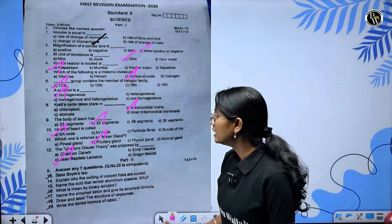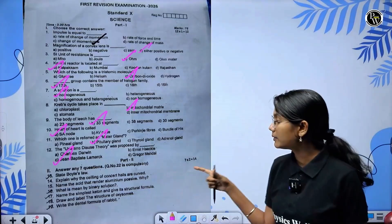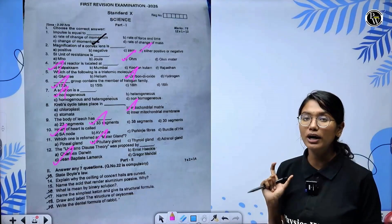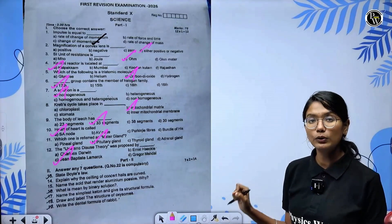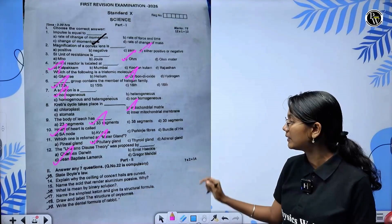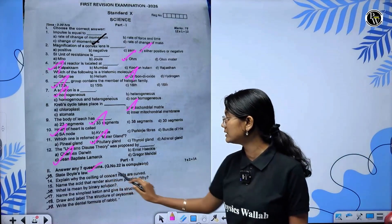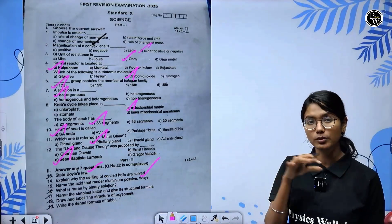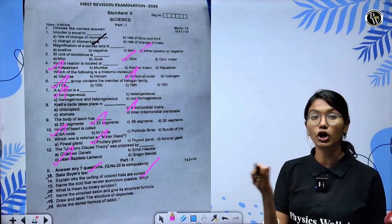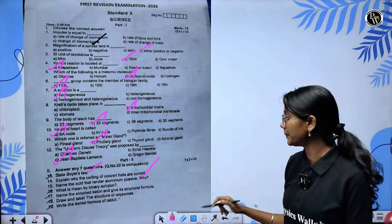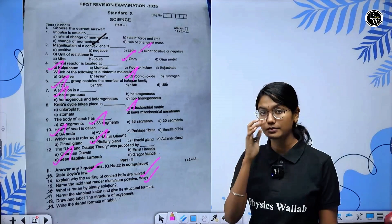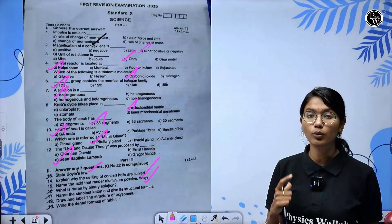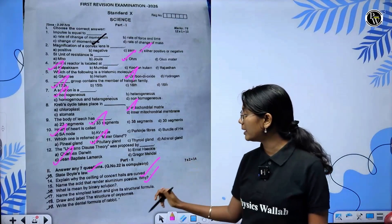Next, answer seven questions - we come to two marks. First question on Boyle's law - P is inversely proportional to volume at constant temperature. Explain why ceiling of concert halls are curved - for uniform distribution of sound to reach all audience members. Name the acid that renders aluminium passive - nitric acid.